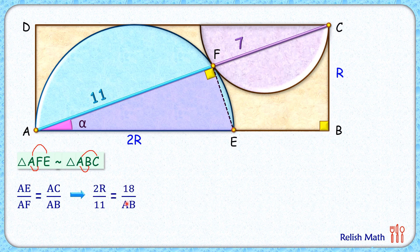Now cross multiplying here, we get 2R times AB is 18 times 11, or R times AB is 99. Now here, if you'll see, R is the height of this rectangle and AB is the length of the rectangle, and length times breadth is the area of the rectangle. Thus the area of the rectangle is 99 centimeters square, and that's our answer.